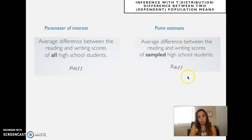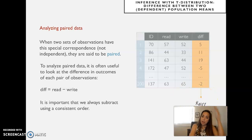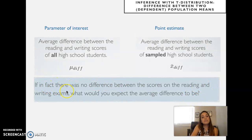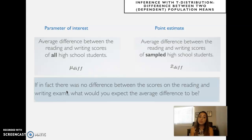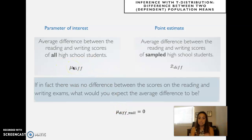The point estimate would be the x-diff we just computed. You compute the difference for each pair, then estimate the population parameter — the difference in the population — by computing the average difference in your sample. If in fact there was no difference between reading and writing exam scores, the difference should be zero. So the null hypothesis states that the mean difference of reading and writing scores in the population is exactly zero.